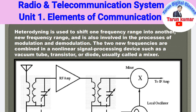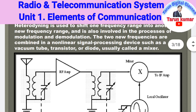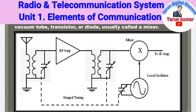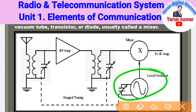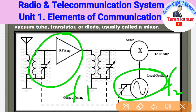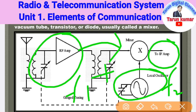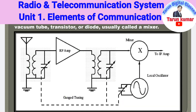These two new frequencies are combined in a non-linear signal processing device such as a vacuum tube, transistor, or diode, usually called a mixer. A mixer is basically a device which combines or mixes two different frequencies or signals. Looking at the circuit diagram again, we have a local oscillator providing frequency f2 and from the input side we get frequency f1. Both frequencies go into the mixer and we finally get a new frequency as the output signal.